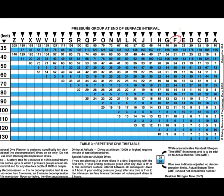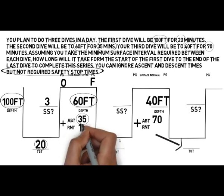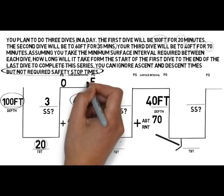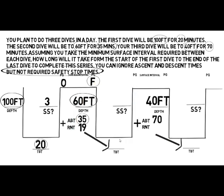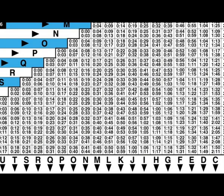Before entering that in, there's one other thing to grab. While we found pressure group F, we may as well also take the residual nitrogen time and put that in on our diagram. So we know we need to be in pressure group F at the beginning of the dive, and if we are in pressure group F our residual nitrogen time will be 19 minutes. Now we can go back and work out what the minimum surface interval would be — we start the surface interval in pressure group O and need to get to pressure group F.